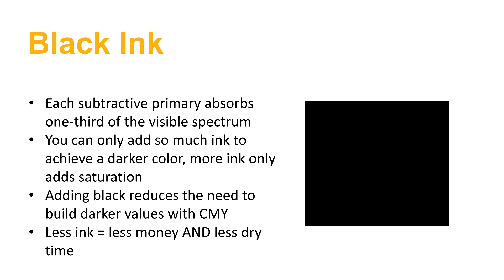Black ink is an additional color that we need to add to that system, and there are many reasons for this. If cyan, magenta, and yellow each absorbed one third of the full visible spectrum wavelengths in a perfect system, combining all three together should give us pure black. But it doesn't work that way because the inks are not perfect — there are deficiencies or weaknesses in the pigmentation that lead to problems. To solve for those problems, we add black ink.